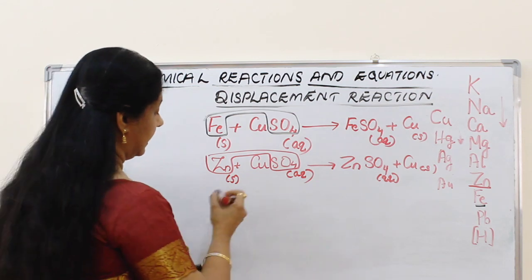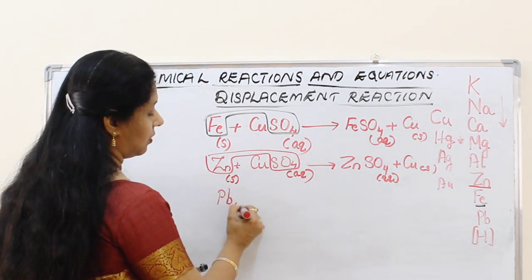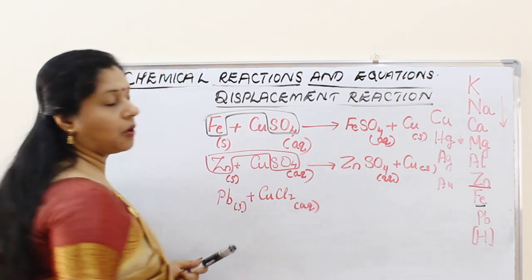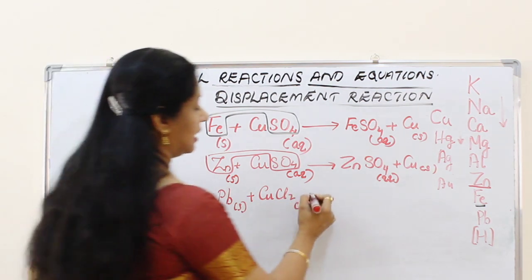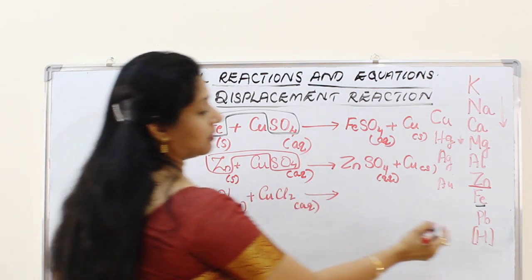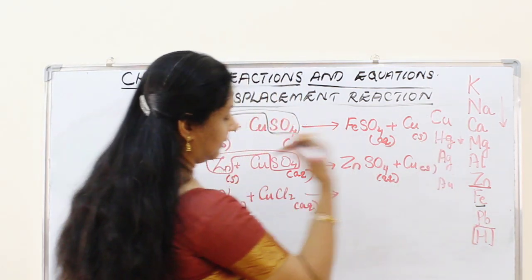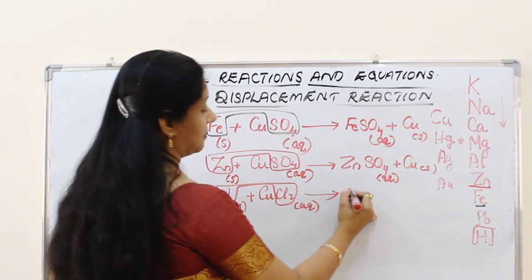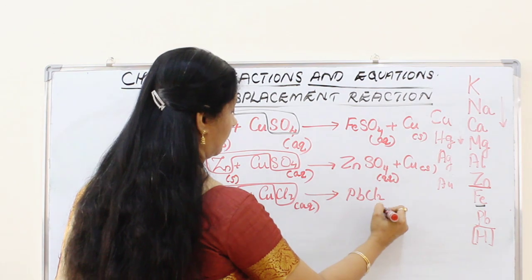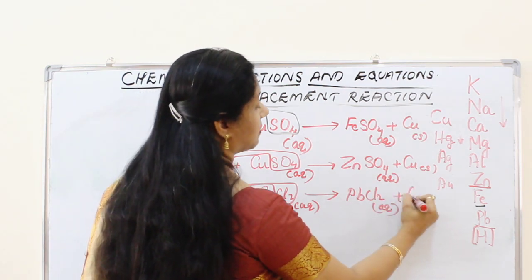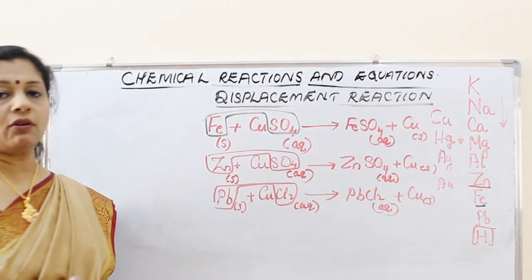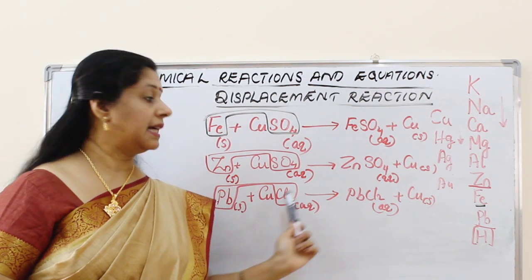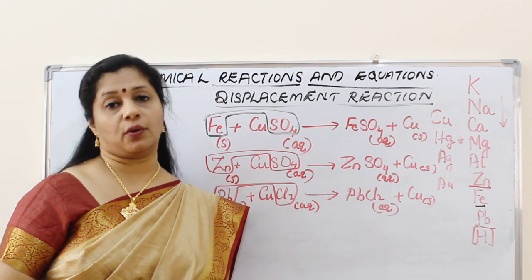Third example: lead in solid form reacts with copper chloride solution, which is greenish in colour. Lead is more reactive than copper, so lead displaces copper, forming PbCl2 (aqueous) and a copper solid deposit. The greenish copper chloride solution loses its colour and becomes colourless lead chloride.